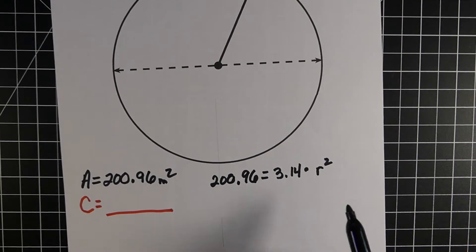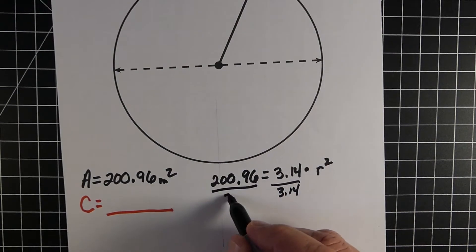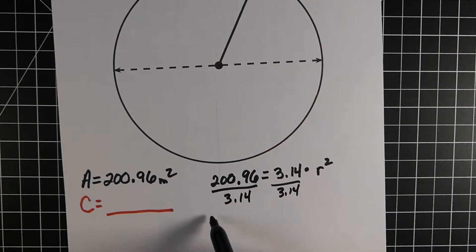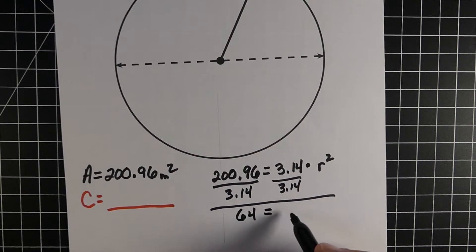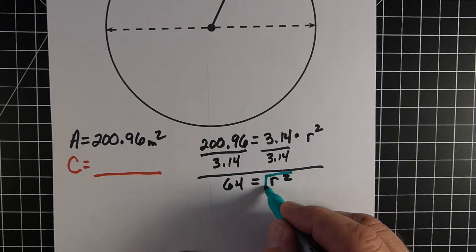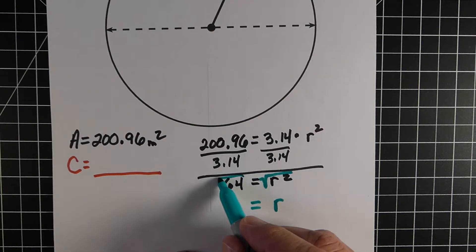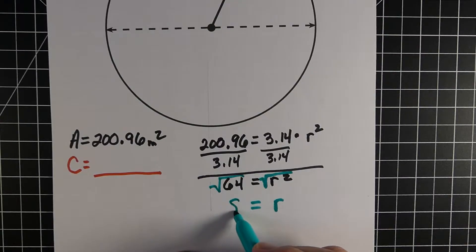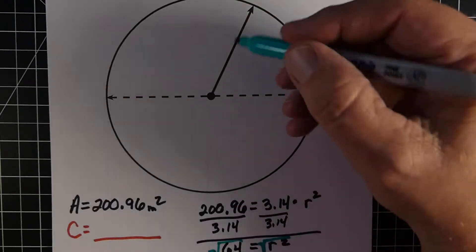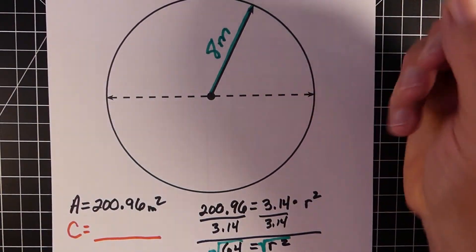Our first step is to divide both sides by pi, by 3.14. When we do that, we have 64 on the left side, and on the right side the 3.14s cancel out, leaving us with radius squared. At this point we need to find the radius itself, not radius squared. So to go from radius squared to radius, we find the square root. The square root of 64 is 8, so the radius of this circle is 8 meters.